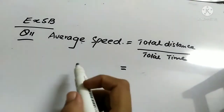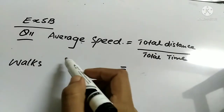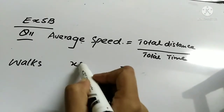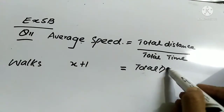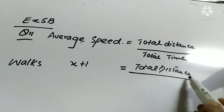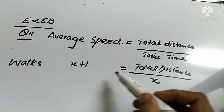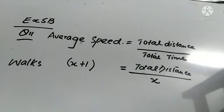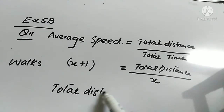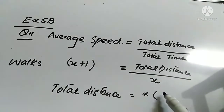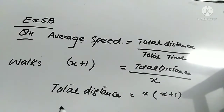When she walks, average speed is (x + 1). We do not know the total distance, but time is given as x. So x is dividing on that side; when we bring it over, we multiply with (x + 1). Therefore total distance when walking = x(x + 1).